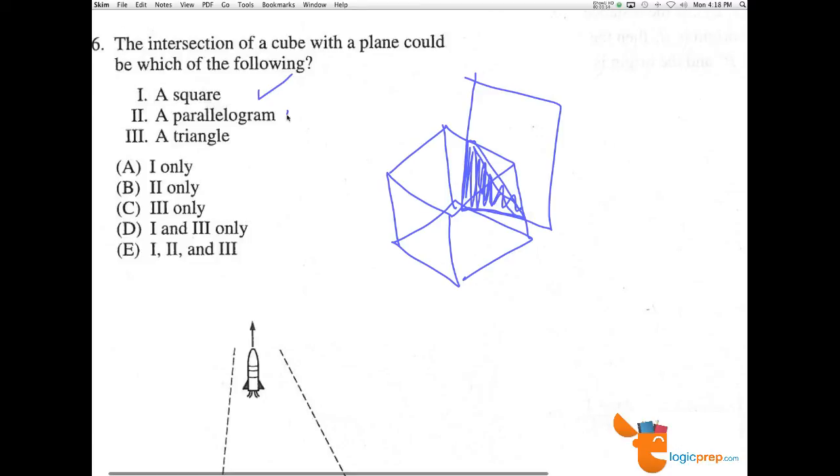So, it can be a square, which is a parallelogram, and we just proved it could be a triangle if we nip off one of these corners, like this even, and cut that off. So, one, two, and three are the correct answer.